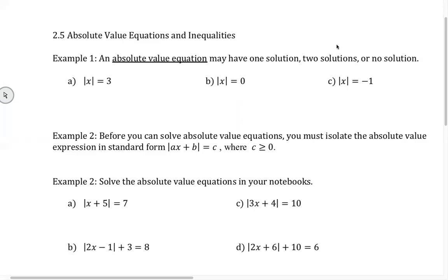Let's talk about 2.5 absolute value equations and inequalities. As you guys recall from algebra 1, absolute value is the distance away from 0, and distance is always positive. So you can remember that it's always distance, or you can just remember that the absolute value of something is always going to be a positive number.